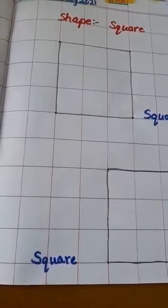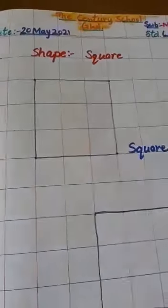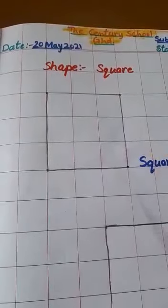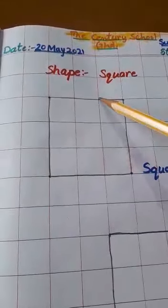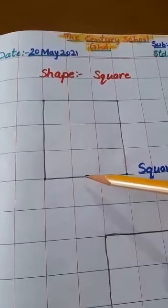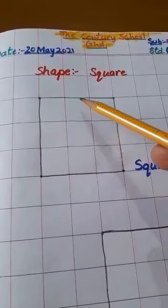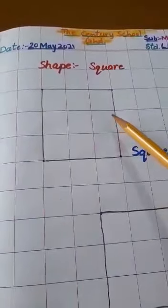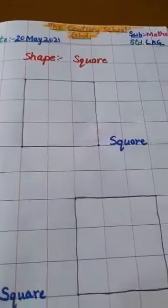Square. Students, remember it. Square has 4 sides, 4 equal sides: 1, 2, 3, 4. It has 4 sides and all sides are equal.